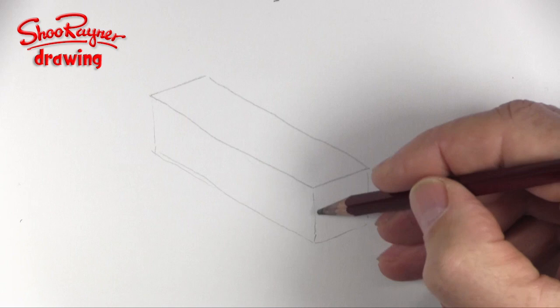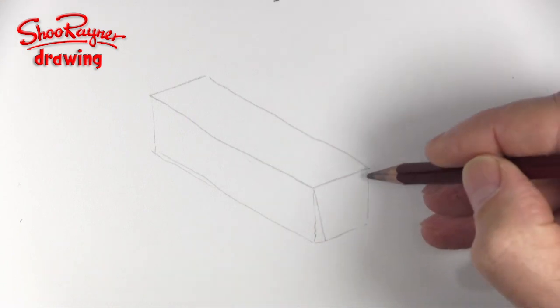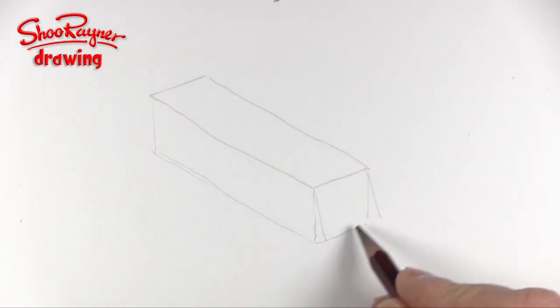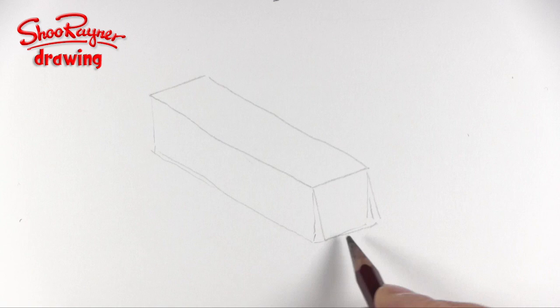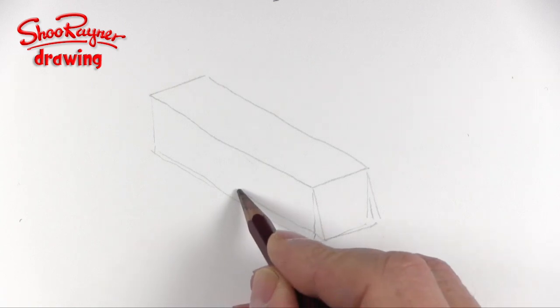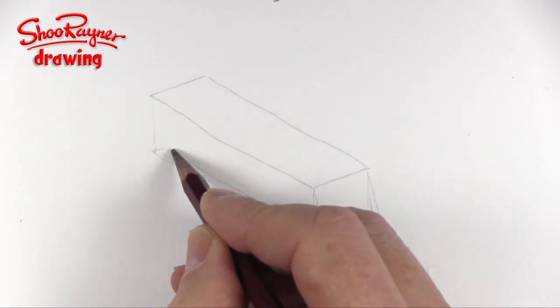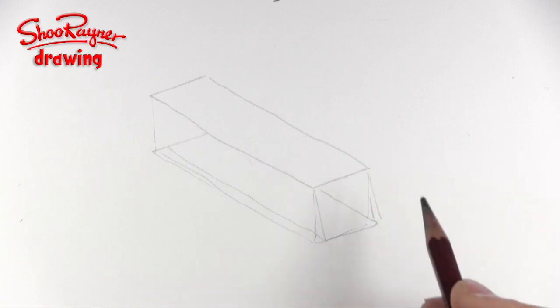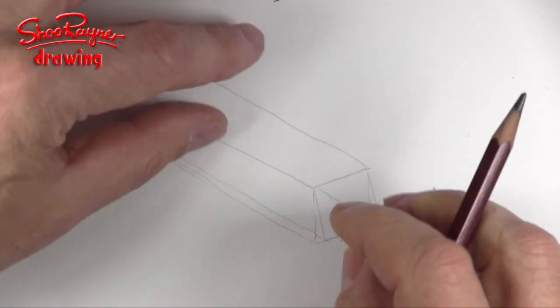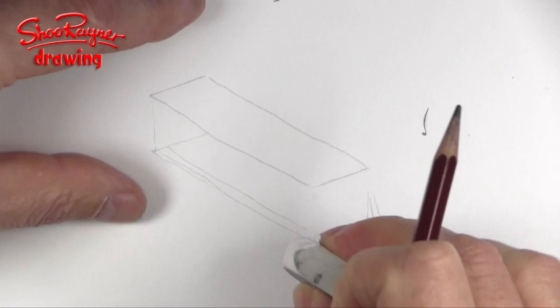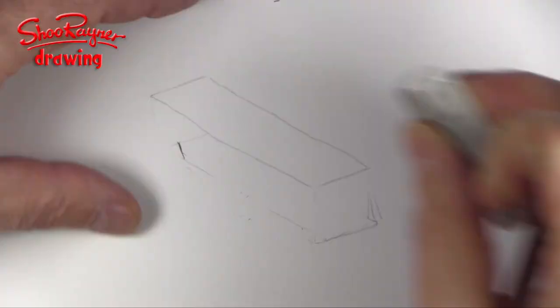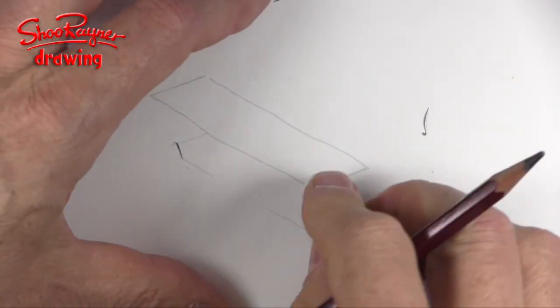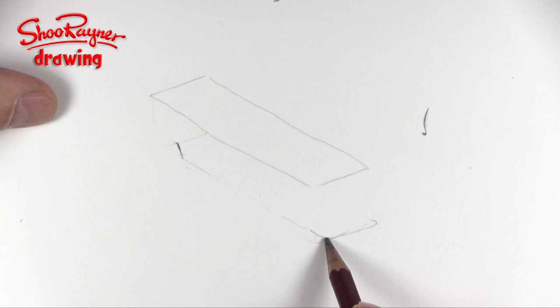But we want the top wing to be in front of the back wing so we're going to tilt it slightly like that so that this will in fact come to about there and this will come to about there and we can get rid of all this kind of stuff which is going to confuse us.